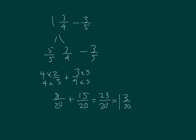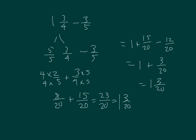One and three-fourths minus three-fifths is equal to one plus fifteen-twentieths minus twelve-twentieths. So we rename them both as twentieths, which equals one plus three-twentieths, which is equal to one and three-twentieths. I did rename both to twentieths to be able to solve that way.